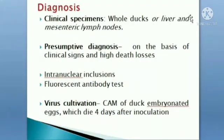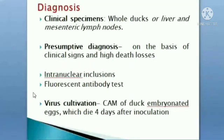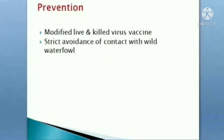For diagnosis, clinical specimens include spleen, liver, and mesenteric lymph nodes. On the basis of clinical signs and histopathology, intranuclear inclusion bodies can be found. Fluorescent antibody tests and virus cultivation can be performed. The CAM of duck embryonated eggs will die 4 days after inoculation; the CAM route into duck embryo is used for virus cultivation.